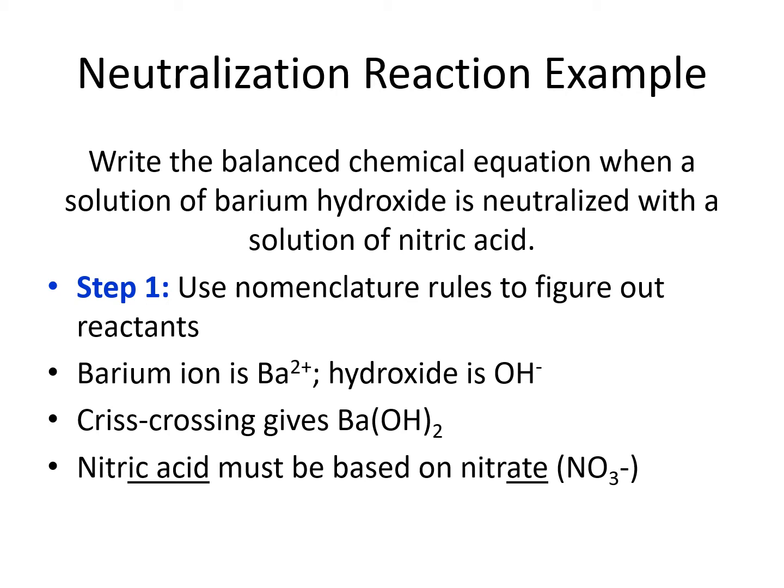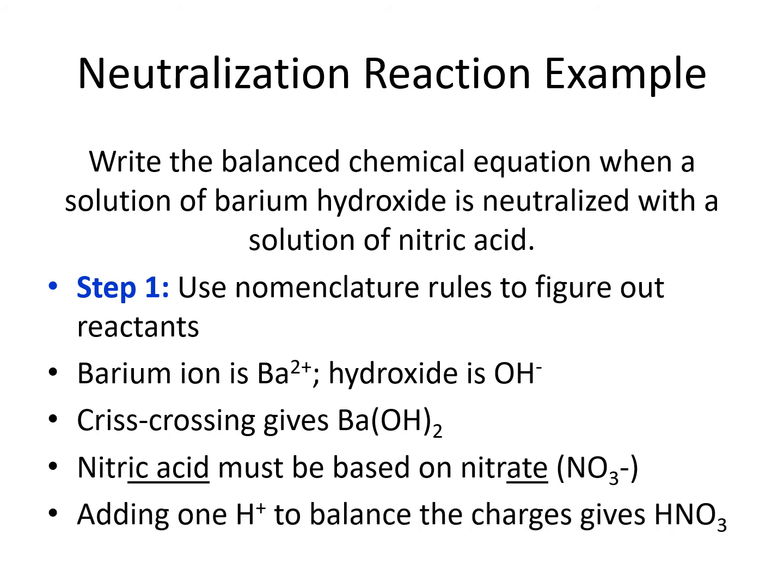Therefore, nitric acid must be based on nitrate. We know from memorizing that nitrate is NO₃ with a minus 1 charge. Since nitric acid is an acid, it must also have hydrogen. We would need 1 H⁺ to balance out the minus 1 charge of the nitrate, so we get HNO₃ as the formula for nitric acid.